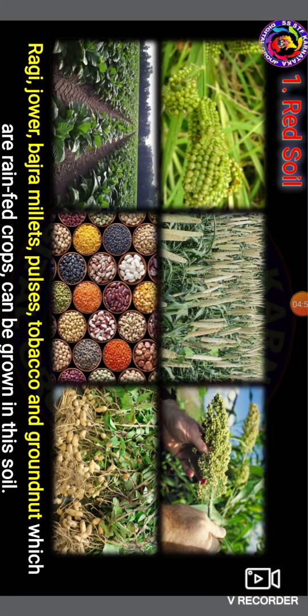Rain-fed crops such as ragi, jowar (jola), bajra (millets), pulses, tobacco, and groundnuts can be grown in red soil. In areas with irrigation facilities, crops like paddy (batta), sugarcane (kabbu), potato (alugindi), vegetables, banana, and coconut can also be grown.